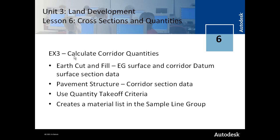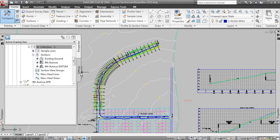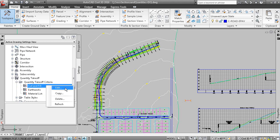In Exercise 3 you learn how to calculate quantities. Earth cut and fill compares the existing ground surface and the corridor datum surface. Pavement structure comes from the corridor section data. You use a quantity takeoff criteria, which will create a material list in the sample line group. The quantity takeoff criteria defines exactly how your volumes are calculated. Under the Settings tab of the tool space, if you scroll down to Quantity Takeoff, you can see Earth Cut and Fill. Right-click and select Edit to view the settings.